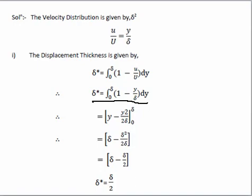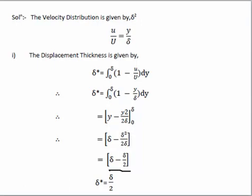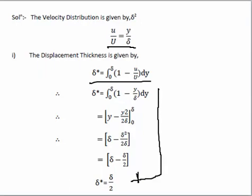So our integration becomes δ* = ∫₀^δ (1 - y/δ) dy. Solving this: the integral of 1 is y, and the integral of y/δ is y²/(2δ), since δ is constant. With limits 0 to δ, we get δ - δ²/(2δ) = δ - δ/2. So finally the displacement thickness δ* equals δ/2.